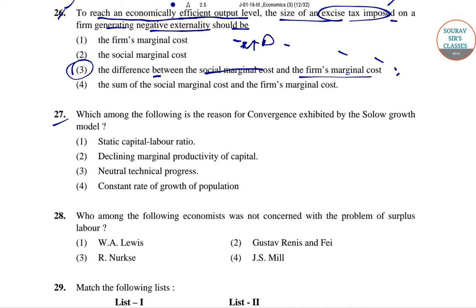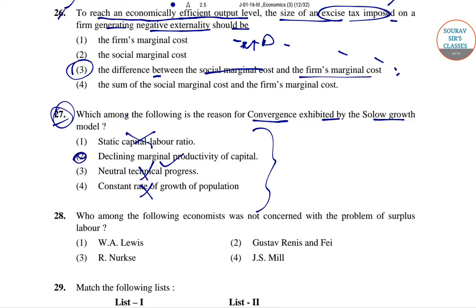Question 27: Which among the following is the reason for convergence exhibited by the Solow growth model? The right answer is declining marginal productivity of capital, so the right answer for question 27 is option 2.